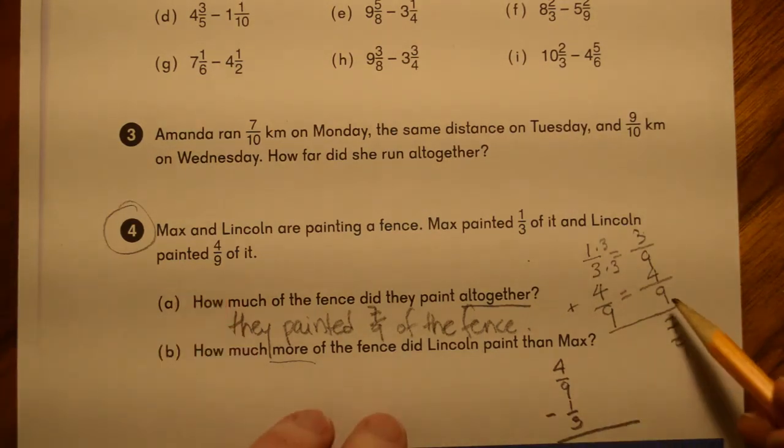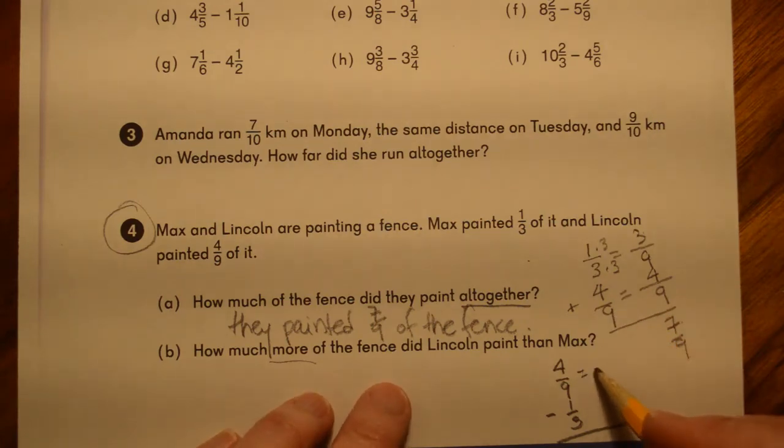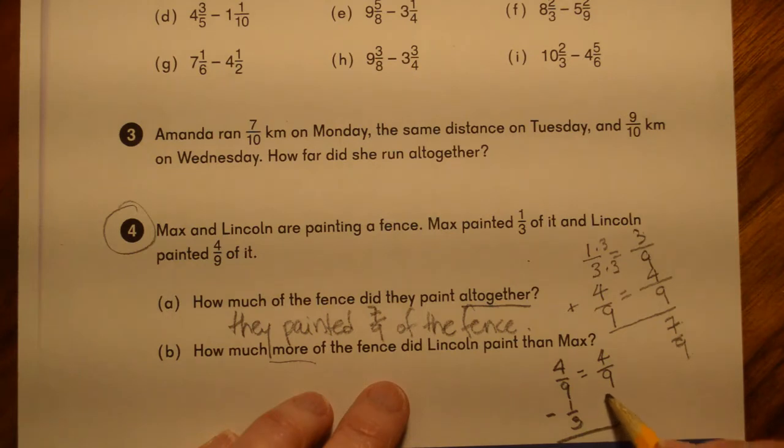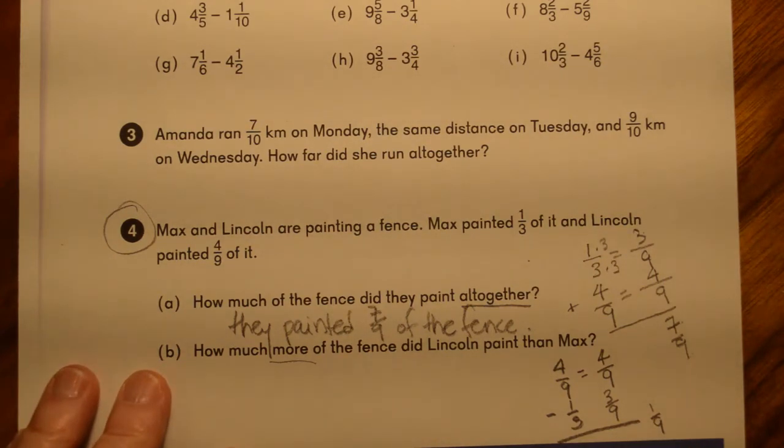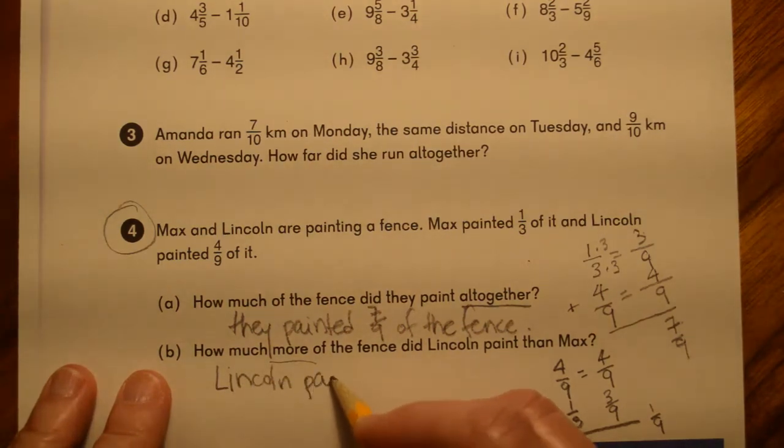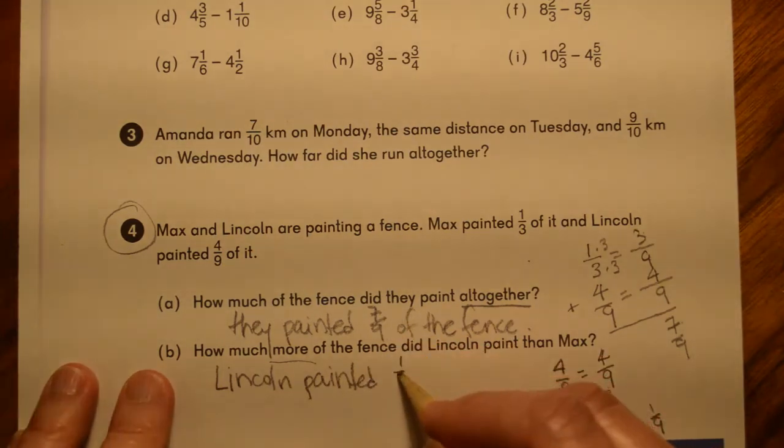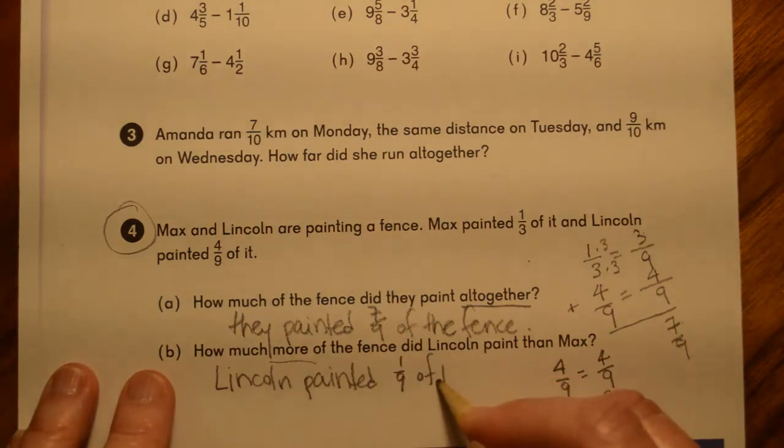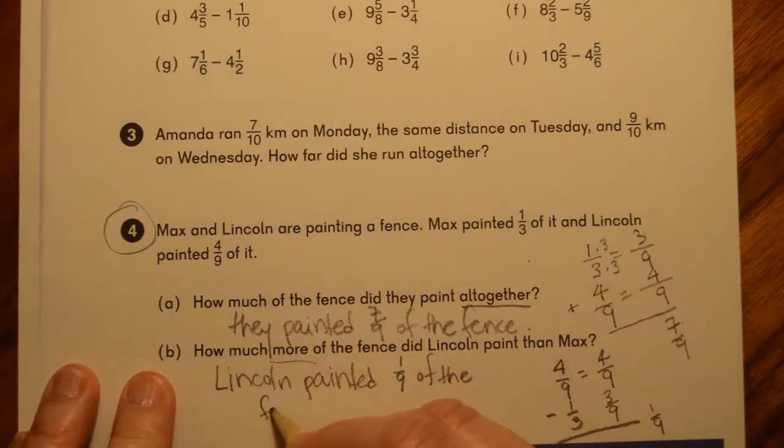Now, we already did all the work up here. We already know what the common denominators are. That's four ninths minus three ninths. Piece of cake. That gives us one ninth. So Lincoln painted one ninth more, one ninth of the fence more than Max.